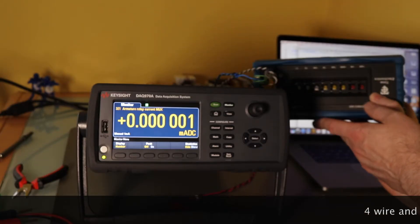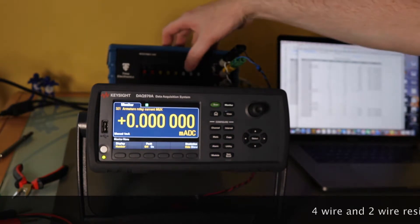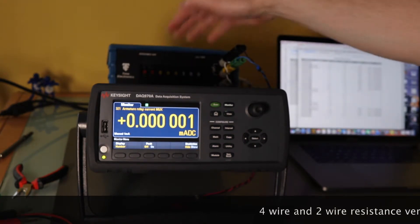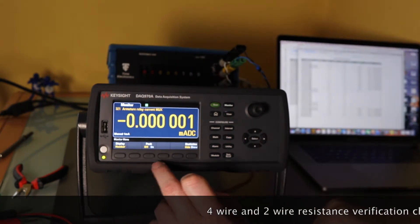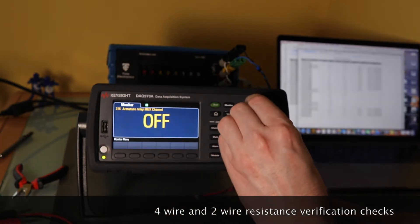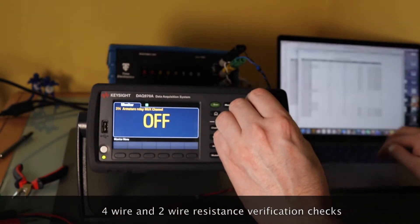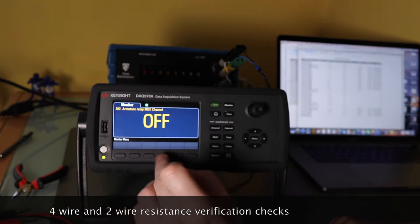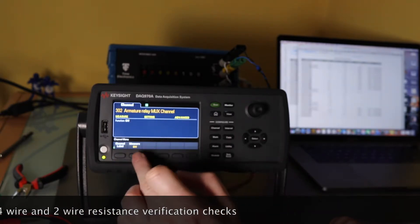So the resistance I'm actually doing with this decade box. We've got 100 ohms. So we need to set up 302 again, isn't it? 302 channel measure.